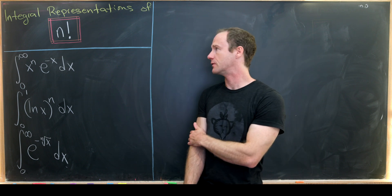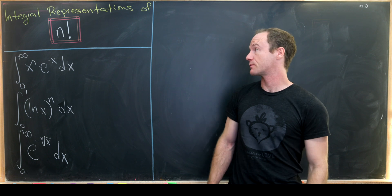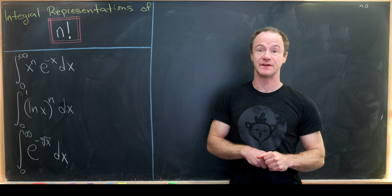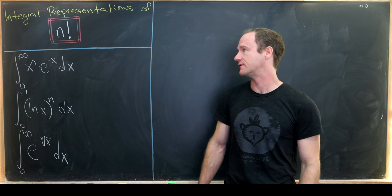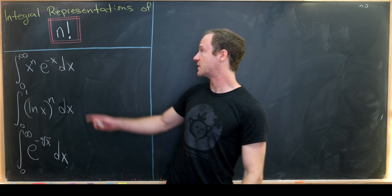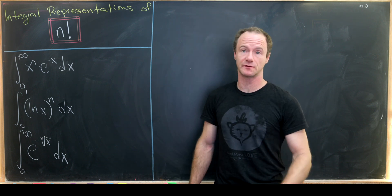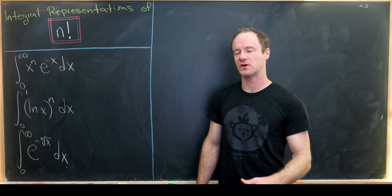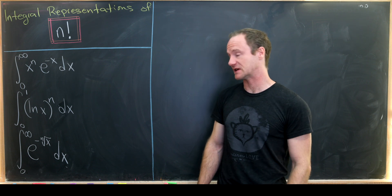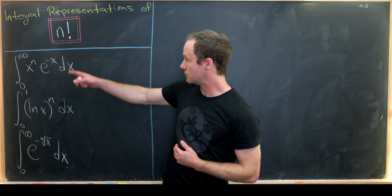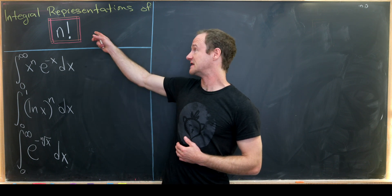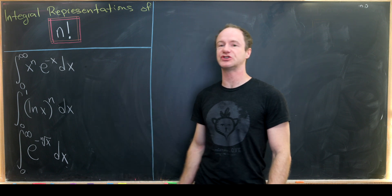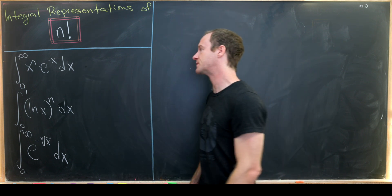Today I've got a bit of a grab bag video for you. We're going to start with some integral representations of n factorial and then use that to explore a family of convergent sequences. It's interesting to look at a couple of different things that are related. The first integral representation we'll look at is the integral from zero to infinity of x to the n, e to the minus x dx, which is related to — in fact exactly equal to — the gamma function.